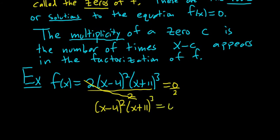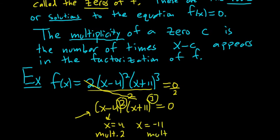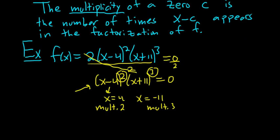So to find the zeros, you always just set everything equal to zero. Then from here you can see the answer is 4 and negative 11. Those are the zeros. And the multiplicity is the number of times x minus 4 appears, so it's just the exponent here. So the multiplicity of 4 is 2, and the multiplicity of negative 11 is 3. So the multiplicity is just the exponent, as long as everything is simplified.